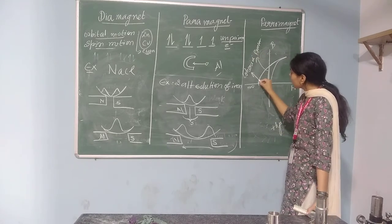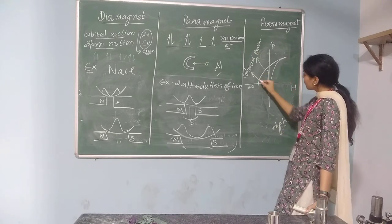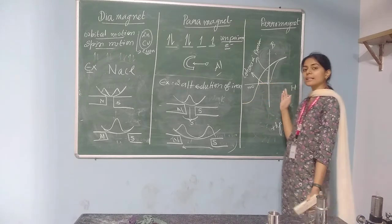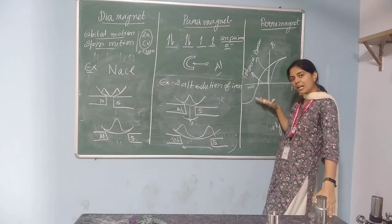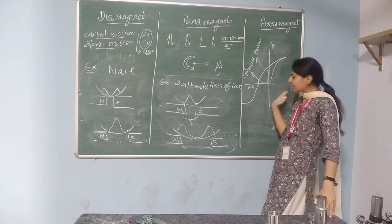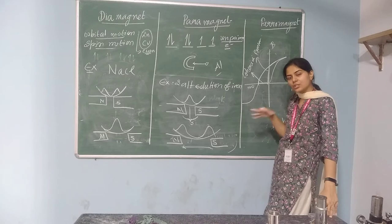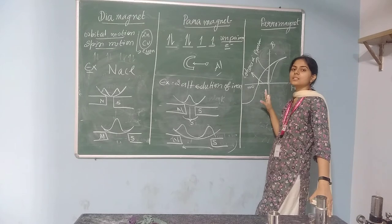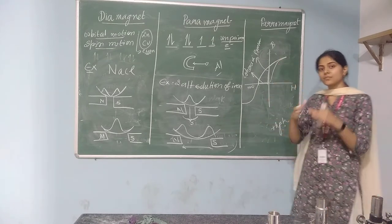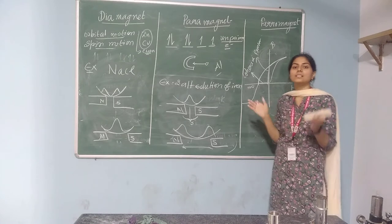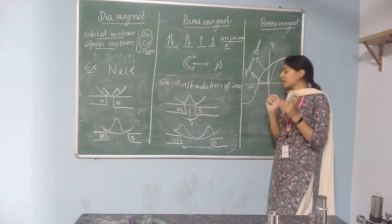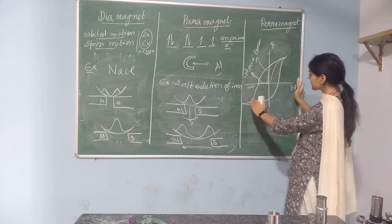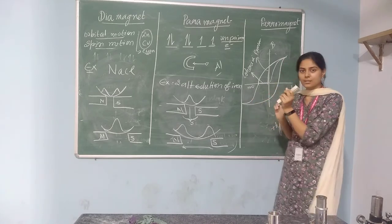If we apply the magnetic force in the reverse direction again, the magnetic dipoles get aligned in the reverse direction. But in order to get aligned in the reverse direction, they lose out so much energy. That is why for some materials the hysteresis curve is fat and for some materials the hysteresis curve is thin.